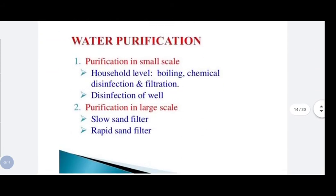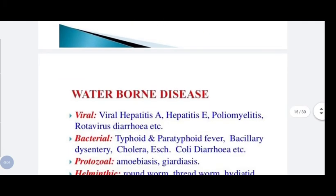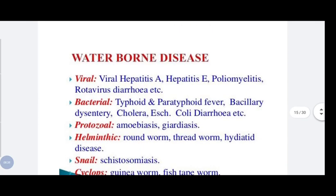How can we purify water? At the small scale — household level — by boiling, chemical disinfection, filtration, and disinfection of wells by chlorination. For purification at large scale, slow sand filters and rapid sand filters are used. These will be studied in a later chapter.